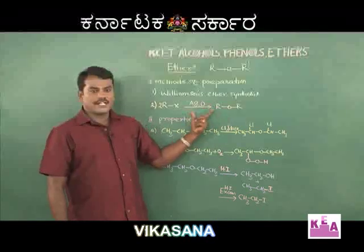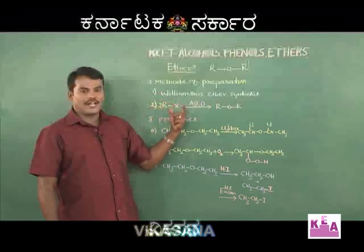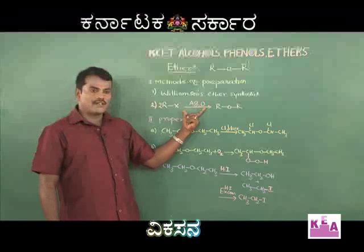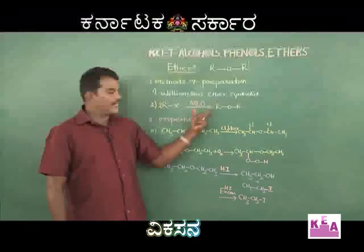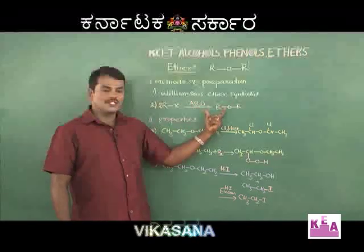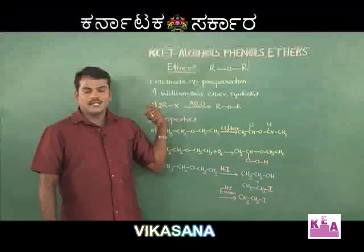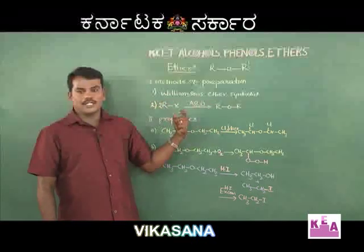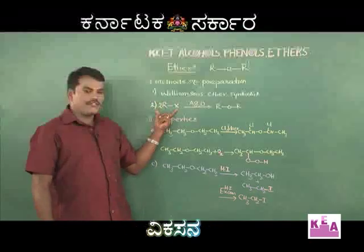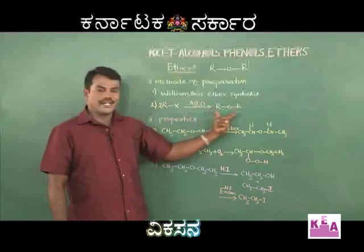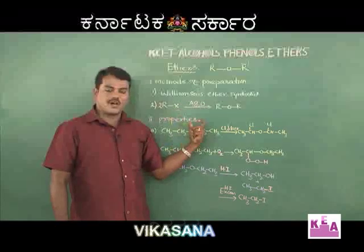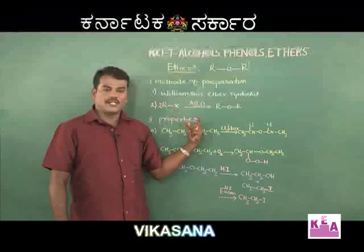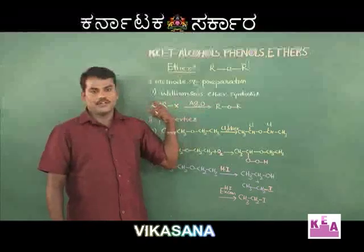Students, be very cautious here. If dry silver oxide (Ag₂O) is used, you get ether. But if moist silver oxide is used, you will not get ether — instead you will get alcohols. Always read the question thoroughly. Dry silver oxide gives ether; moist silver oxide gives alcohols. Do not forget this distinction.